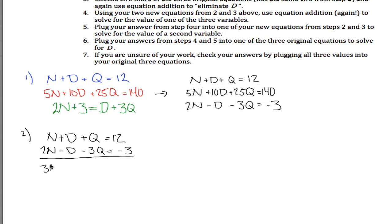2N plus N is 3N, D and negative D cancel out, Q plus negative 3Q is minus 2Q, and then 12 plus negative 3 is a 9.